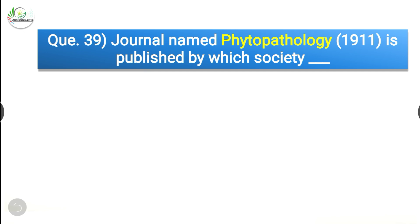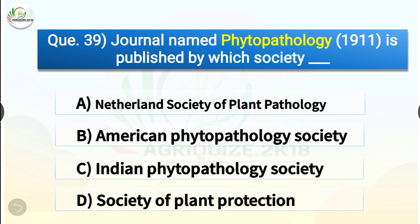Question number thirty-nine: The journal named Phytopathology, started in the year 1911, is published by which society? The options are Netherlands Society of Plant Pathology, American Phytopathology Society, Indian Phytopathology Society, or Society of Plant Protection. The correct answer is option B, American Phytopathology Society. Phytopathology is the official journal of the American Phytopathology Society.